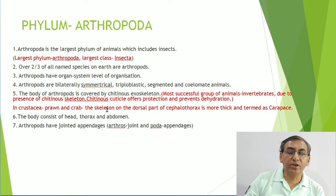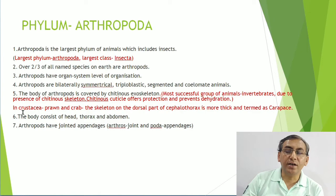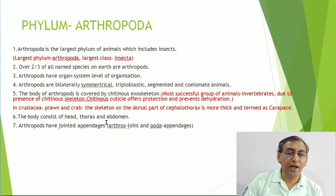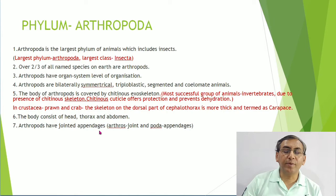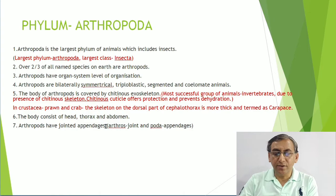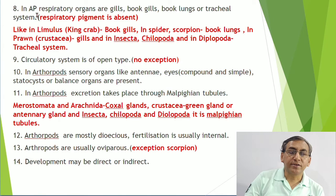The body consists of head, thorax, and abdomen - mainly three parts, sometimes two, as in some arthropods where the head and thorax fuse to form the cephalothorax. The two common characters present in all arthropods without exception are jointed appendages and chitinous exoskeleton. In Arthropoda, respiratory organs are gills, book gills, book lungs, or tracheal systems. Respiratory pigment is absent in Arthropoda.